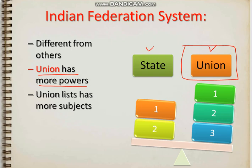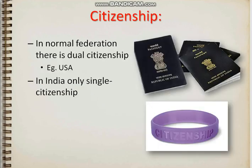In the lists, there were 97 subjects on which the Union can form the rules, while there were 66 subjects in the State list. That is why it is considered a very important feature — the Union list has more powers in comparison to the State list.